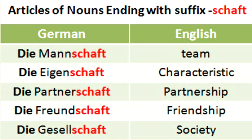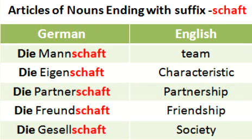In this video, the tip we are going to share is to identify the gender of the noun, which will help you in using the correct article. In German, you will quite often come across nouns with the ending '-schaft.' All nouns with this suffix are feminine nouns, and for a feminine noun we know that the article will be 'die.'